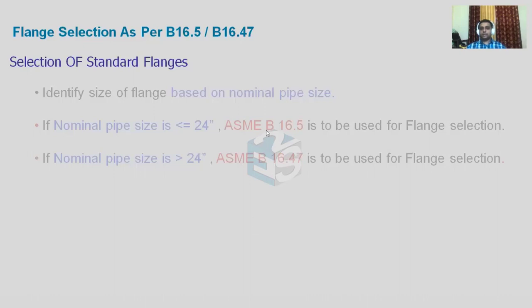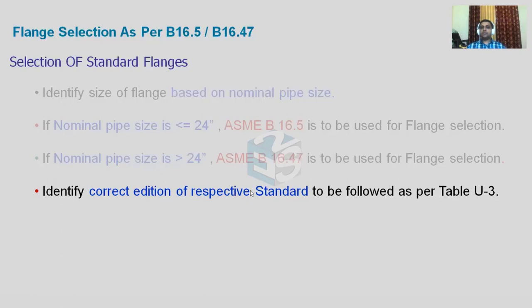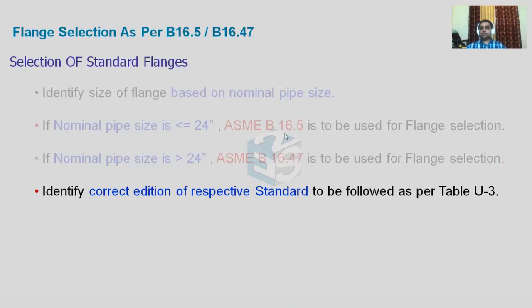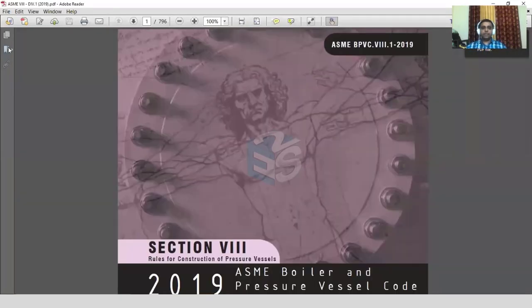So to summarize: below or equal to 24 inches use B16.5, and above 24 inches use B16.47. After selecting the standard, we have to go to ASME Section 8 Division 1, Table U3, to find the correct edition of the respective standard. B16.5 may have a 2019 or 2020 edition available in the market, but what matters is which edition is referenced in Table U3.